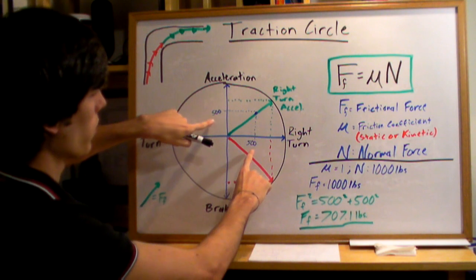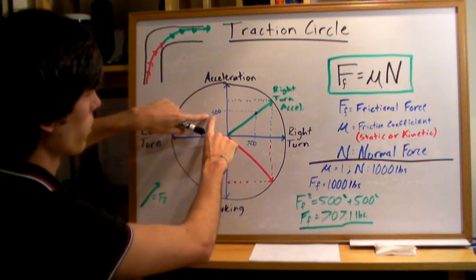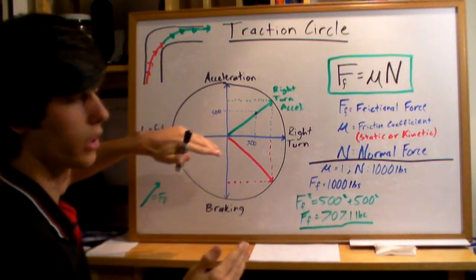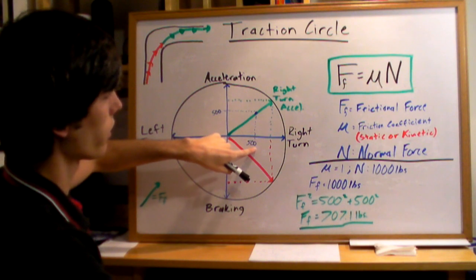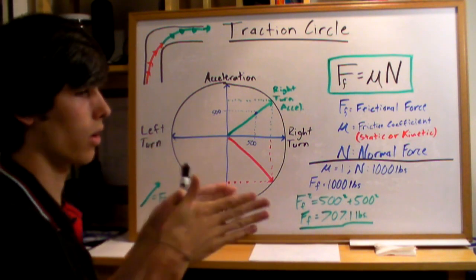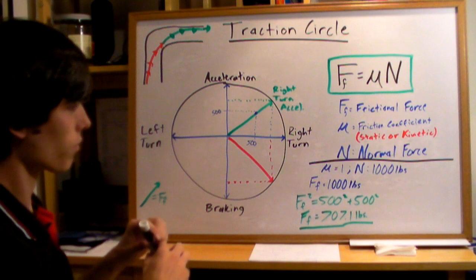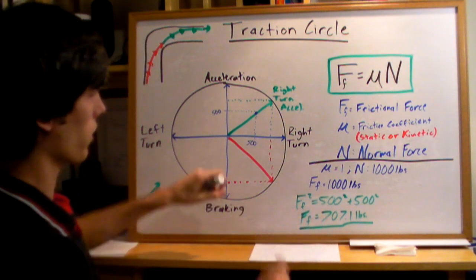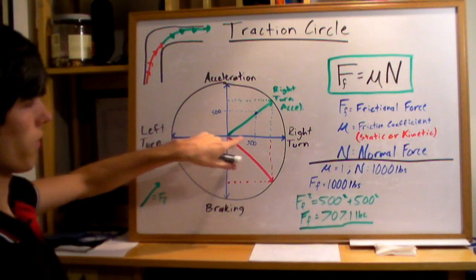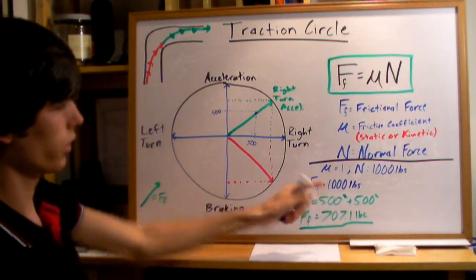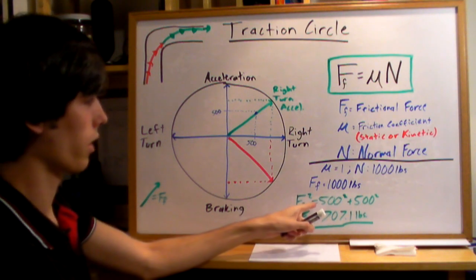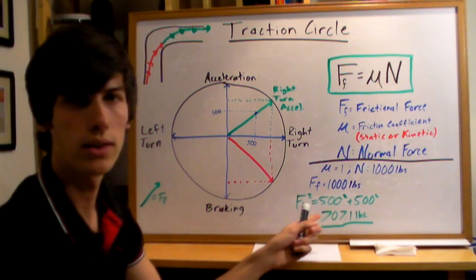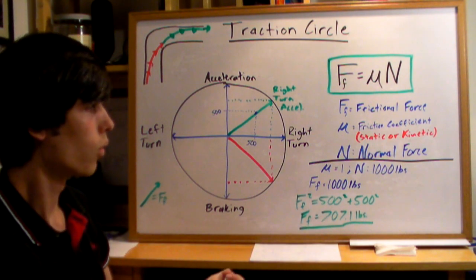That's what we've got going on here in this traction circle. We've got 500 pounds are working towards acceleration. That's the friction that you're using in order to push your car forward. Then you're using 500 of those pounds to hold your car where it is, and not slide to the left. A simple calculation to calculate the frictional force, just using Pythagorean theorem. You've got 500 here, 500 here. Calculate the hypotenuse. So you're going to have 500 squared plus 500 squared equals the frictional force squared. So the frictional force will come out to be 707.1 pounds.